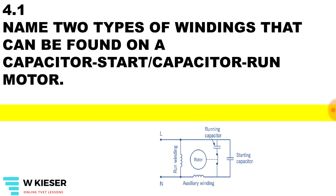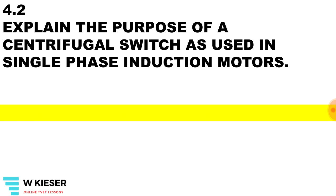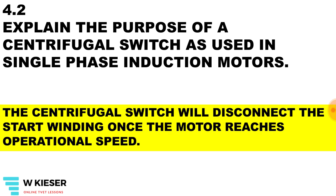We have two types of windings found on capacitor start and capacitor run induction motors: the start winding and the run winding. Explain the purpose of a centrifugal switch as used in single-phase induction motors. The centrifugal switch will disconnect the start winding once the motor reaches operational speed.